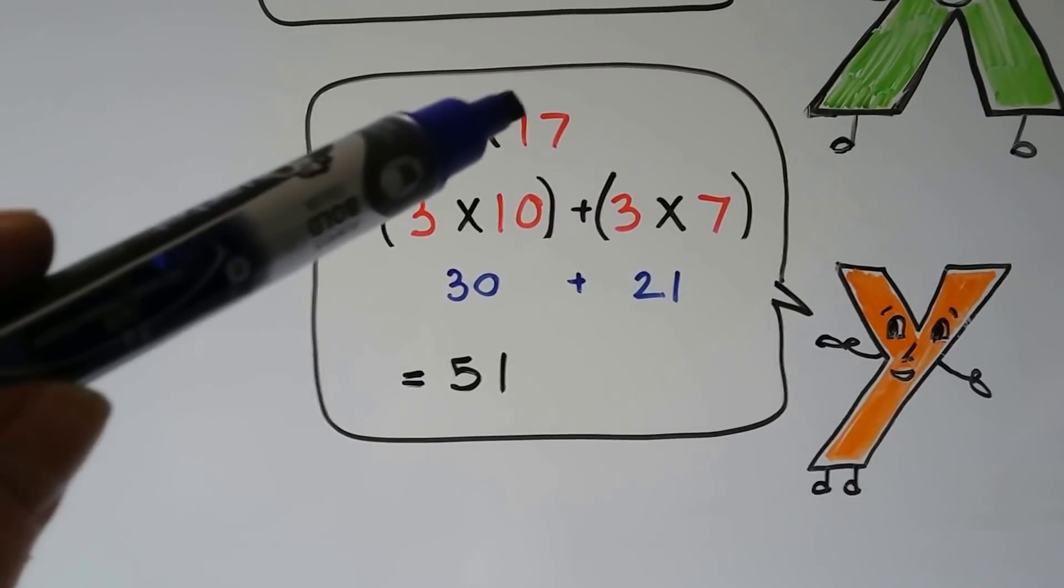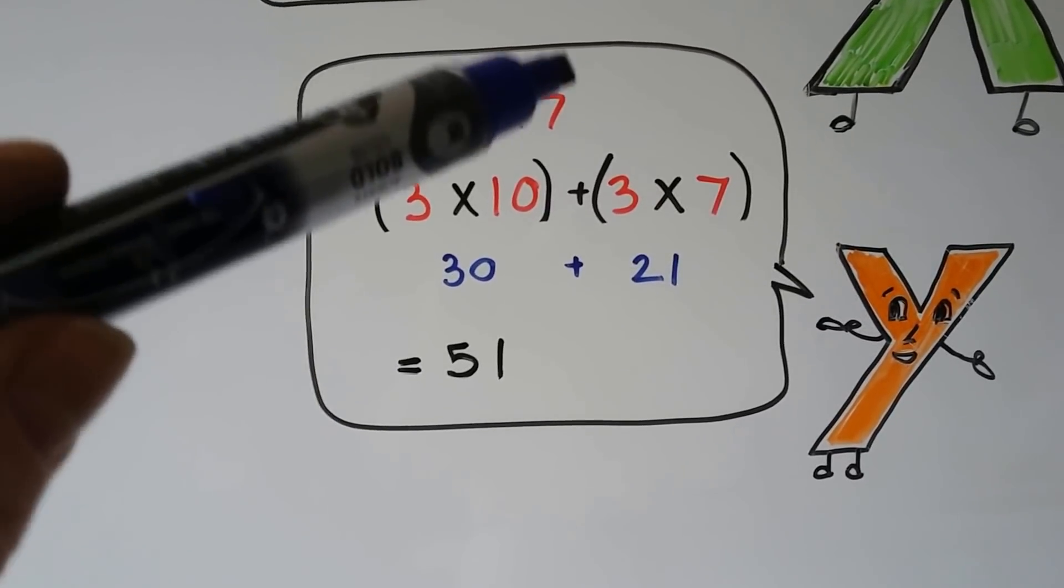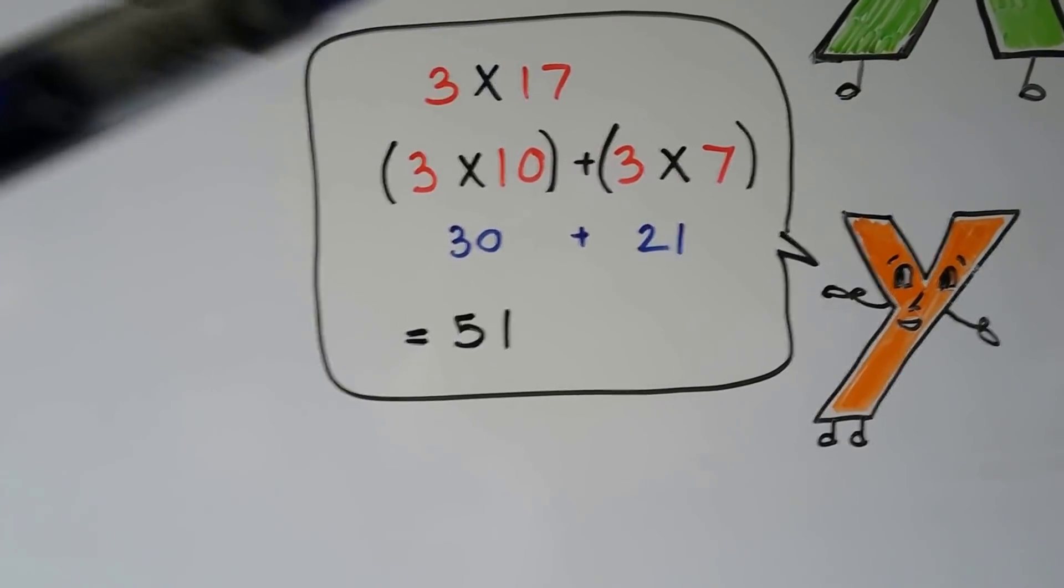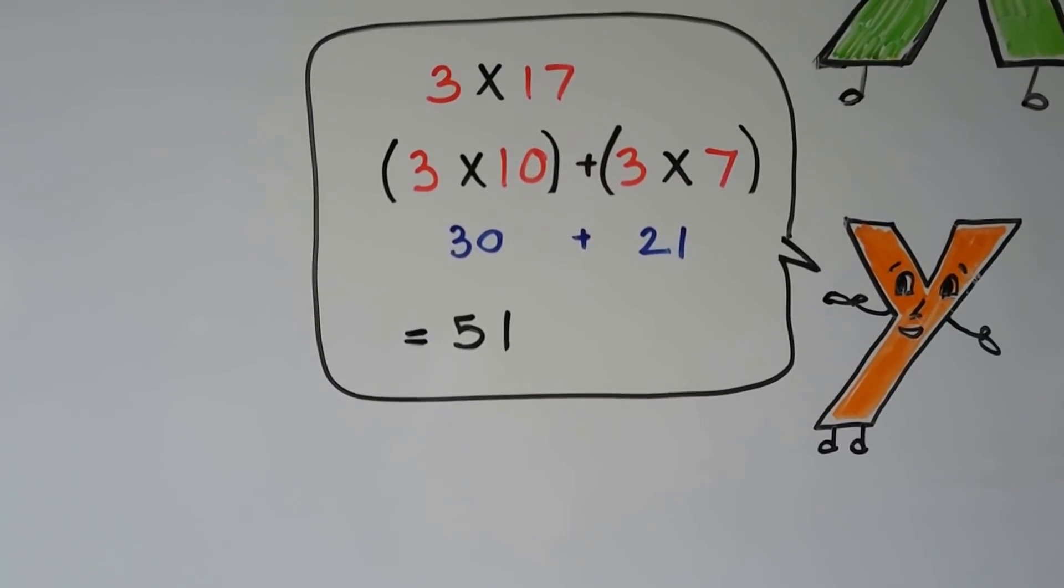You could do that mental math. You can think in your head, well, the 17 is a 10 and a 7, and 3 times 10 is 30, and 3 times 7 is 21, and then you add them together.